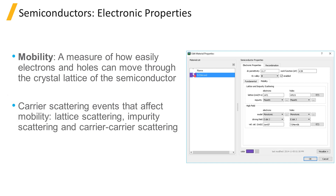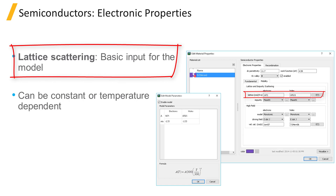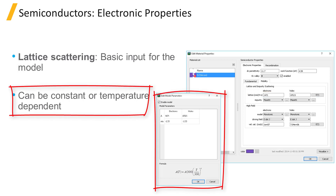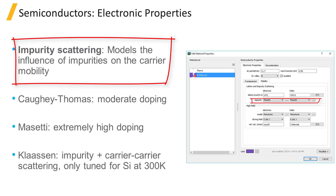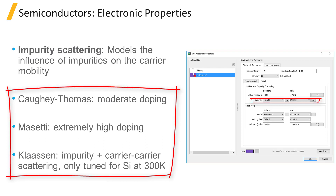In addition, the velocity of the carriers is observed to saturate at high fields. Each of these scattering mechanisms can be modeled in device by applying the appropriate models. The fundamental process that impedes the free motion of carriers in the lattice is thermal scattering off the lattice itself. The mobility due to lattice scattering is treated as a basic input into the device semiconductor model and may be entered as a constant value or with a temperature dependence described by the universal temperature model. Many models exist to account for the influence of impurities on carrier mobility. Device provides support for three common models: the Kage-Thomas model, the Massetti model, and the Klaassen model.